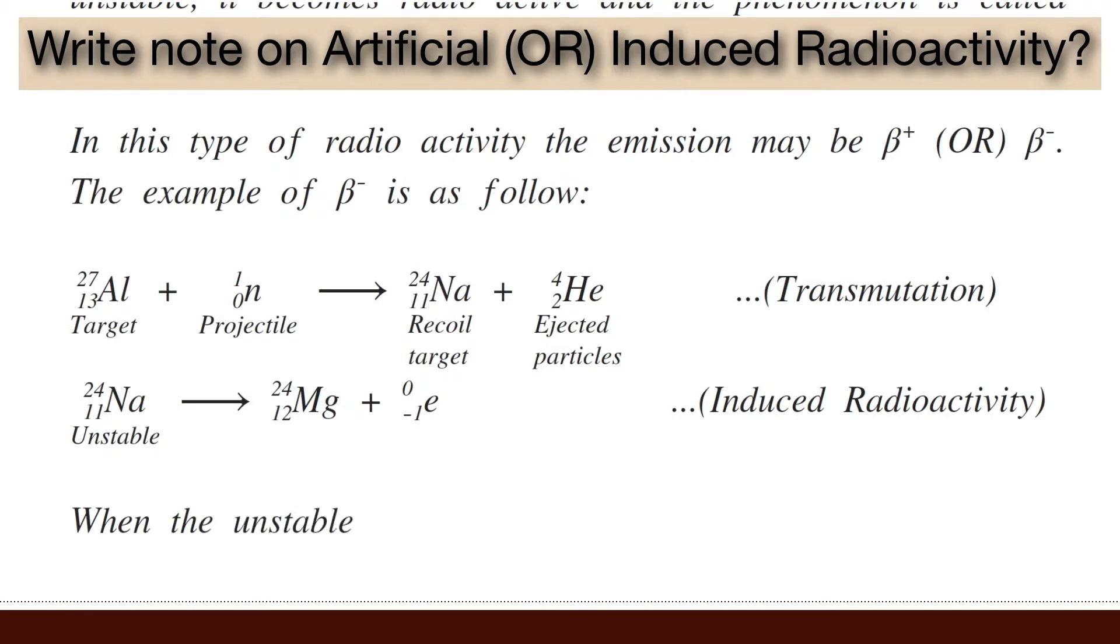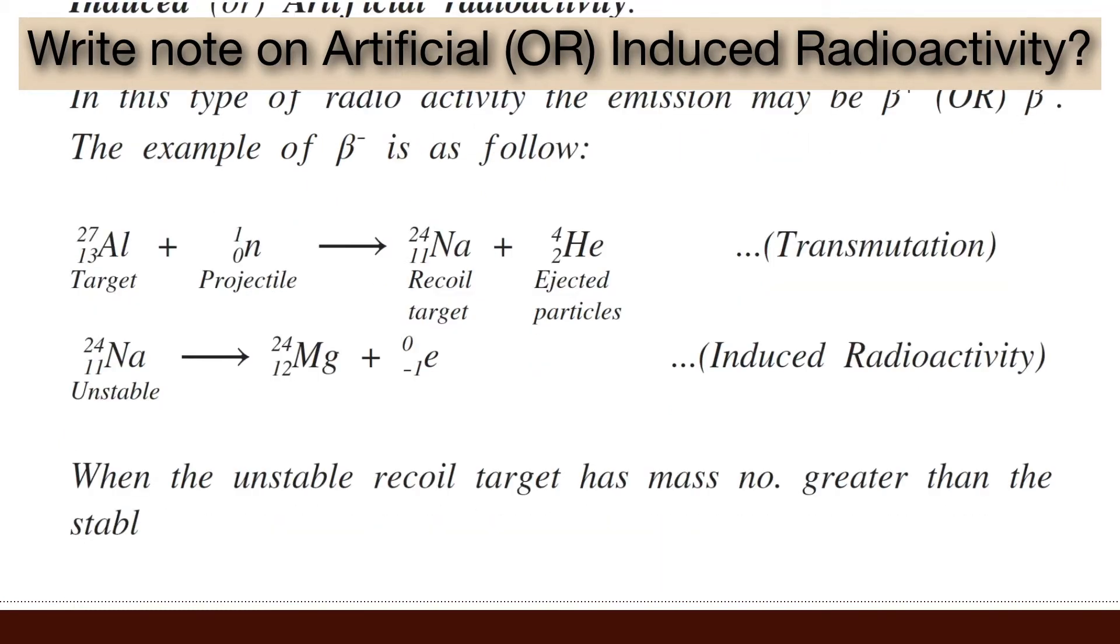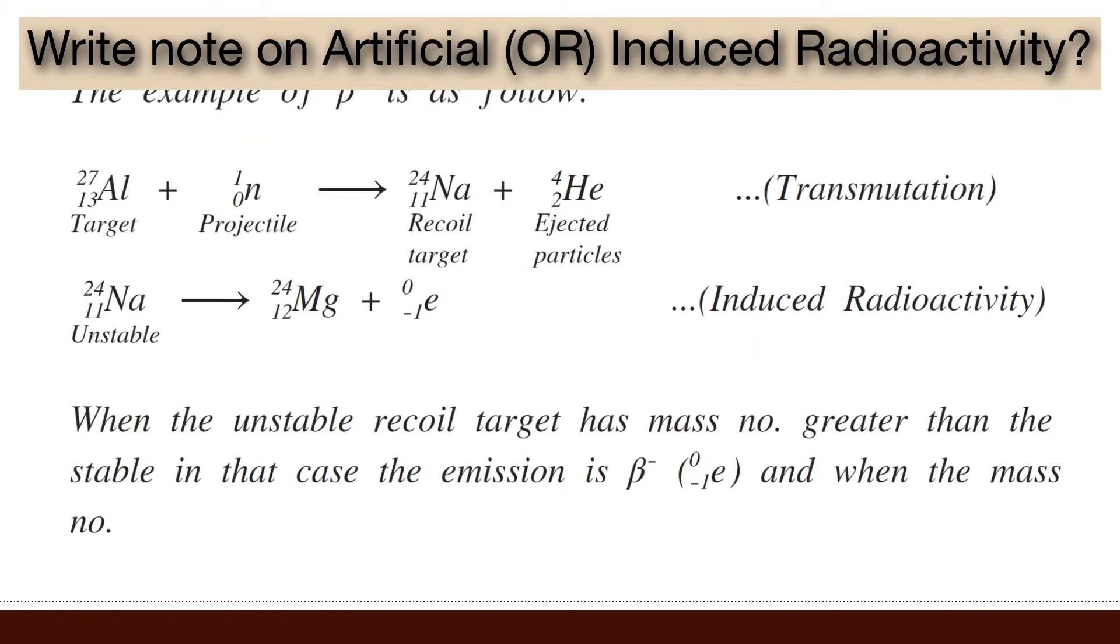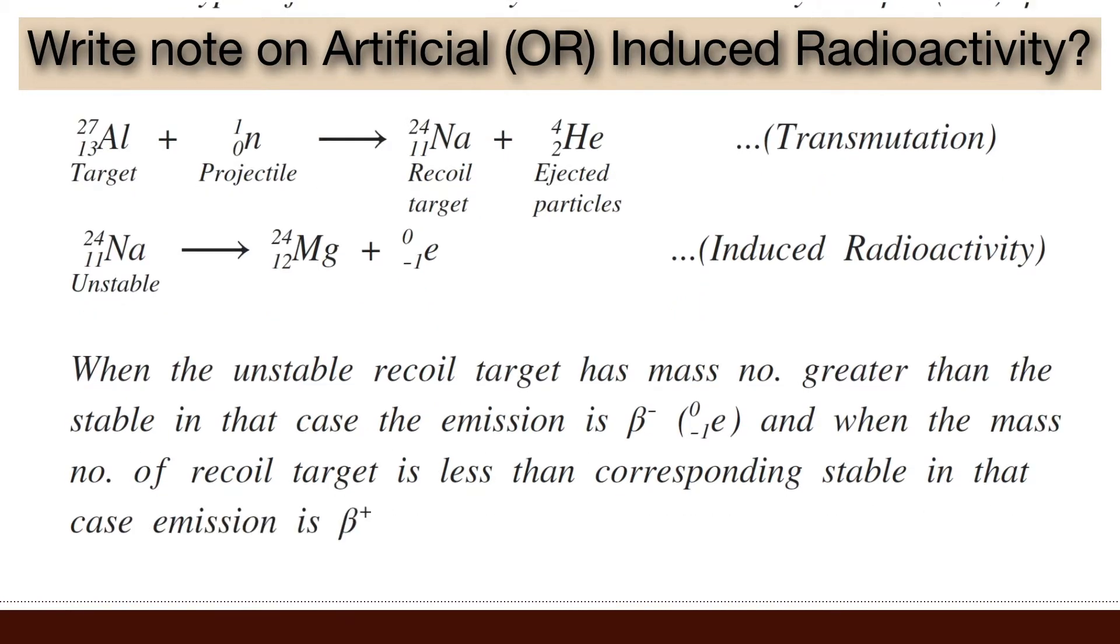When the unstable recoil target has mass number greater than the stable, in that case, the emission is beta-negative or electron. And when the mass number of recoil target is less than the corresponding stable one, in that case, the emission is beta-positive or proton.